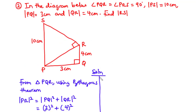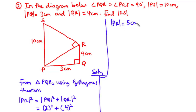Therefore the length PR equals 5 centimeters. Now since we know PS = 10 centimeters and PR = 5 centimeters, we can find the length of side RS using triangle PRS.